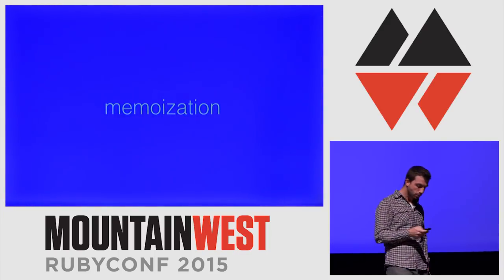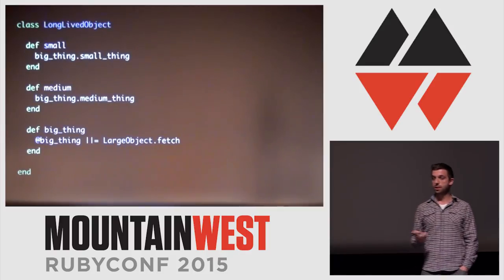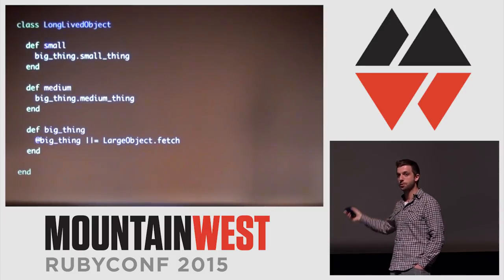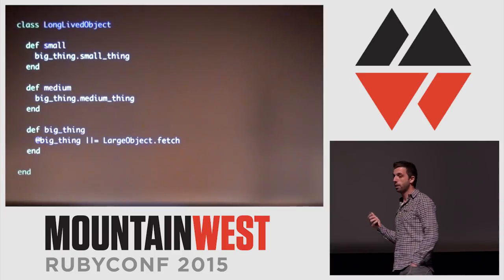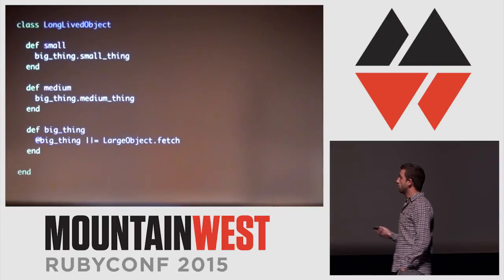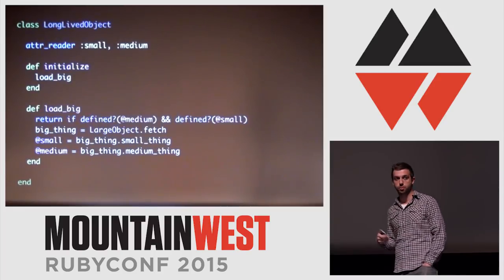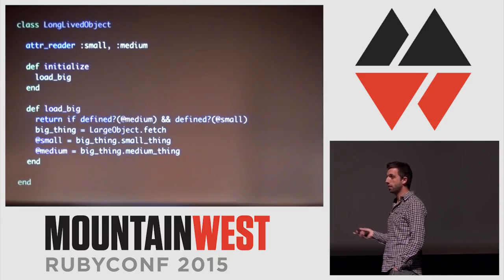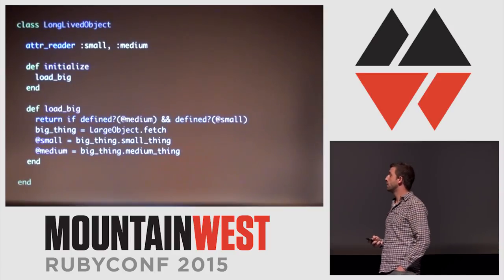Now let's talk about memoization. This is a pretty classic Ruby pattern — we have a big_thing method that memoizes its result so we don't call it twice when asking for small_thing and medium_thing. The problem is that if this object lives for a long period of time, the first time you call small_thing or medium_thing, big_thing has to stay in memory forever until the object can be garbage collected. For long-lived objects, it's better to write something slightly more complicated where large objects are freed after use by loading big_thing only during initialization.